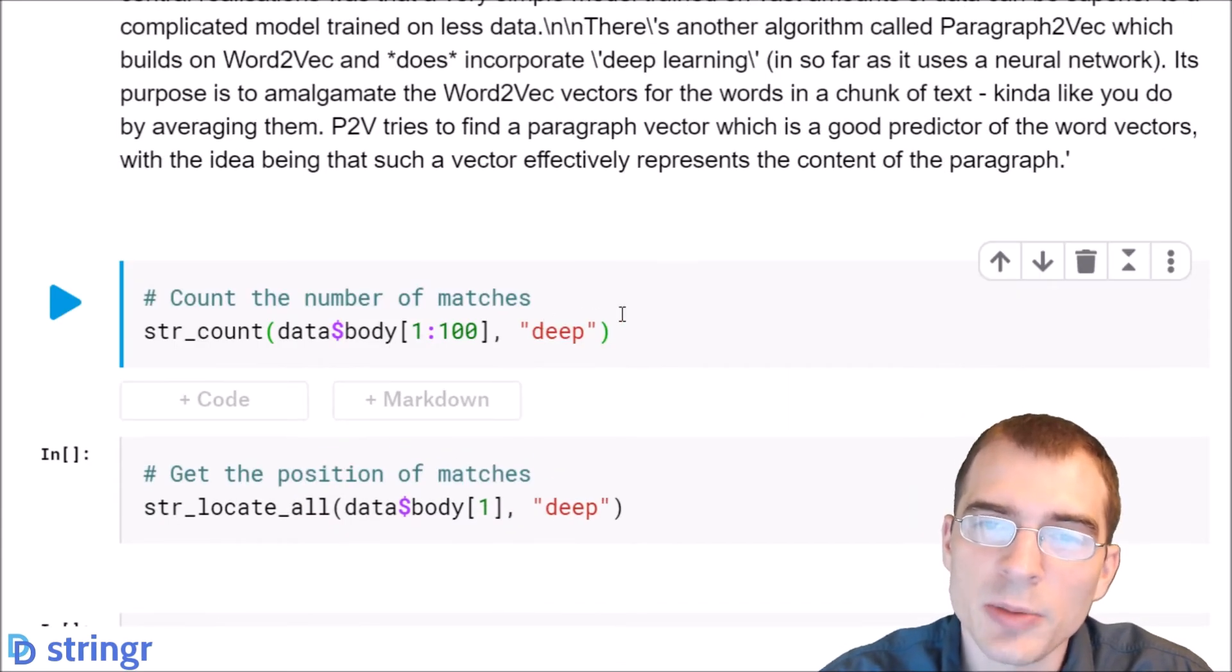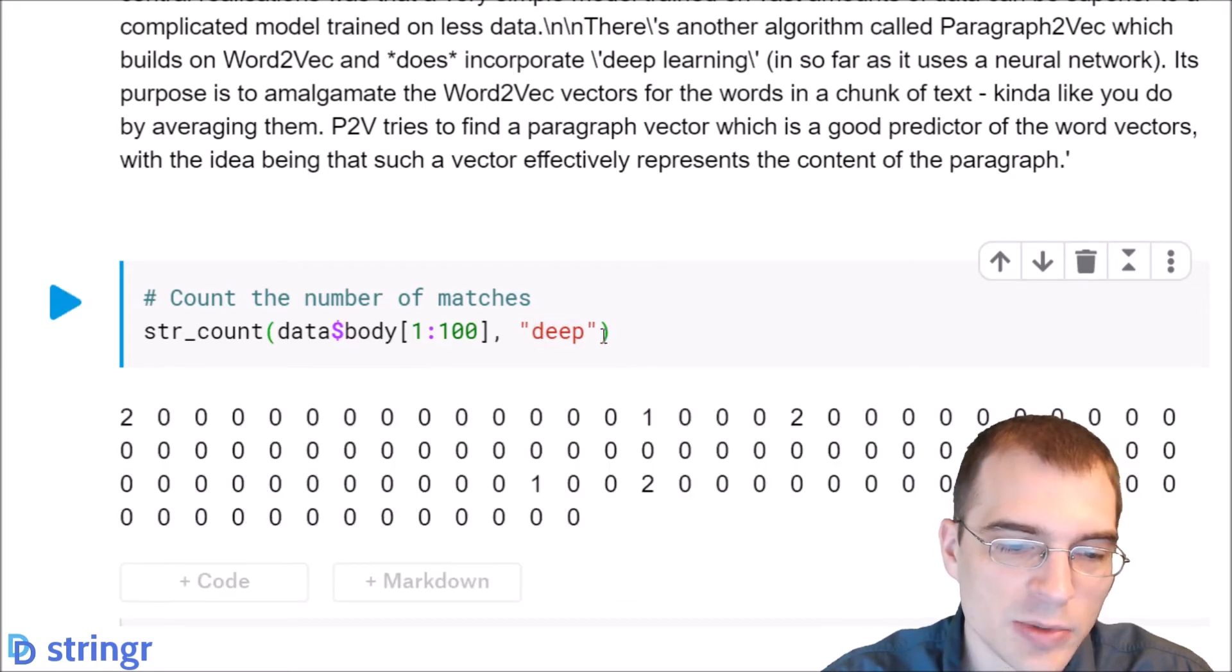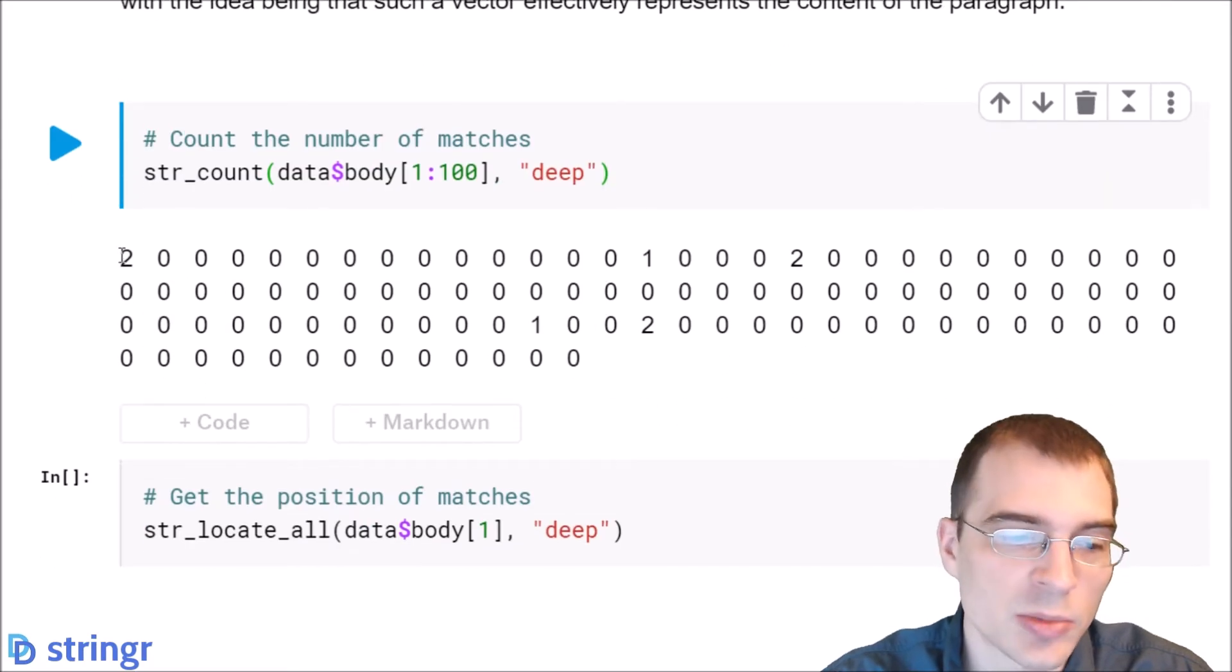So we can also count how many occurrences of a substring exist within a string using the str_count function. Some of these posts were pretty long, so they might have actually mentioned the word deep more than once. So we'll run that and we can see that the first post did mention it more than once. There's two there.